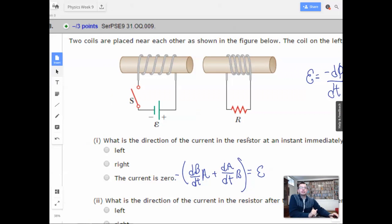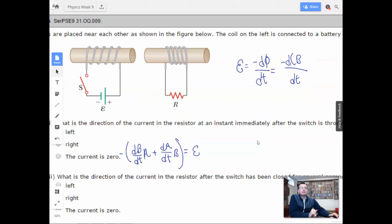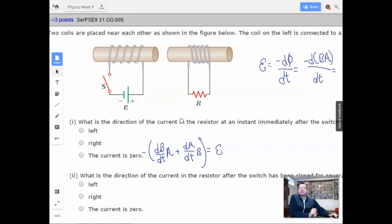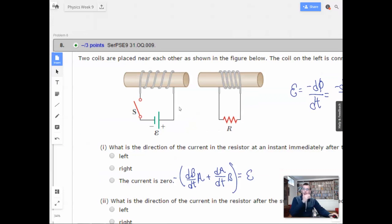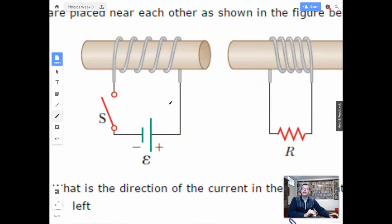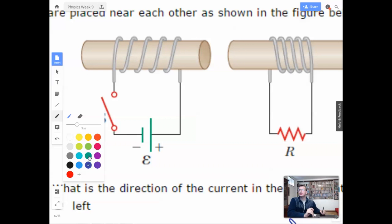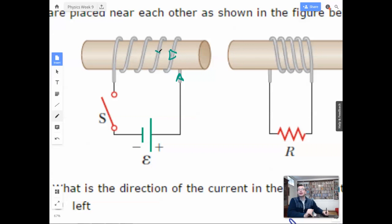So, what is the direction of the current at an instant immediately after the switch is thrown? Switch is thrown — there is a current. Current comes up this way, down this way, down this way, down this way, down this way. Using the right-hand rule.